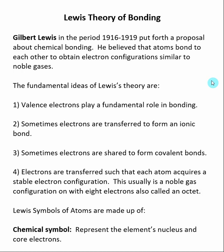The first real ideas about bonding came from Gilbert Lewis, and this was in the early 1900s. His proposal was that atoms bonded to each other to gain stability, and they did that by gaining the electron configuration similar to noble gases.